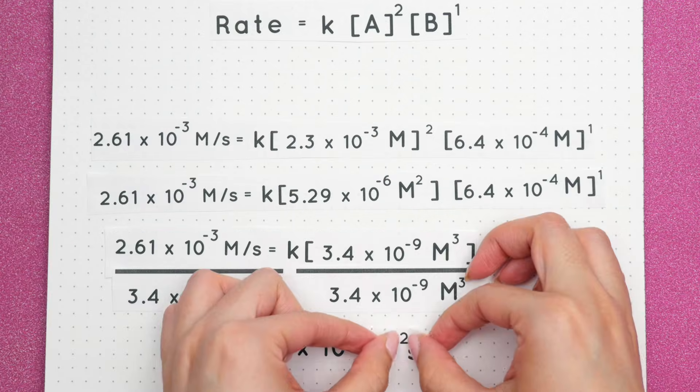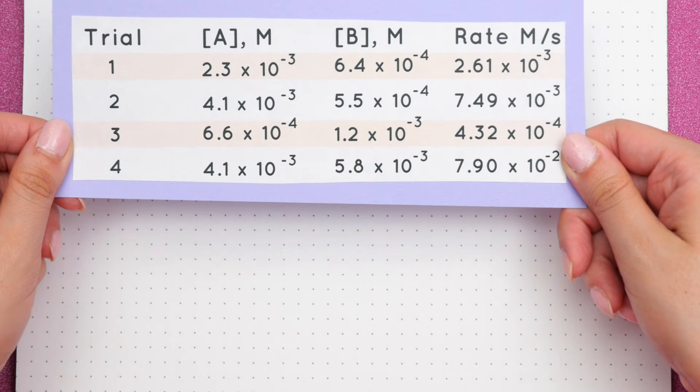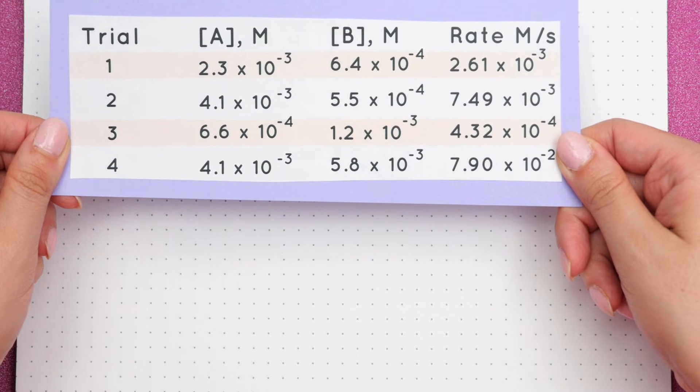This is the rate constant for trial 1 with the proper units, but now we have to find the rate constant for all the other trials using the same process.